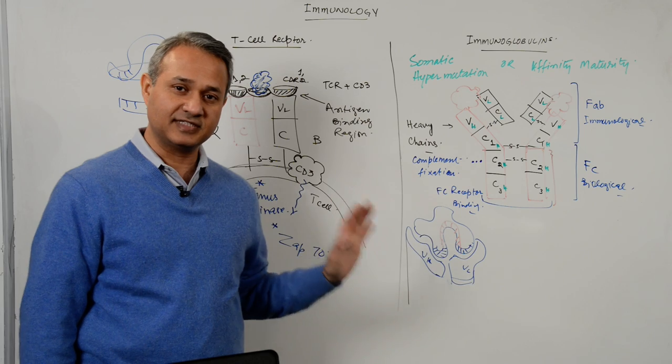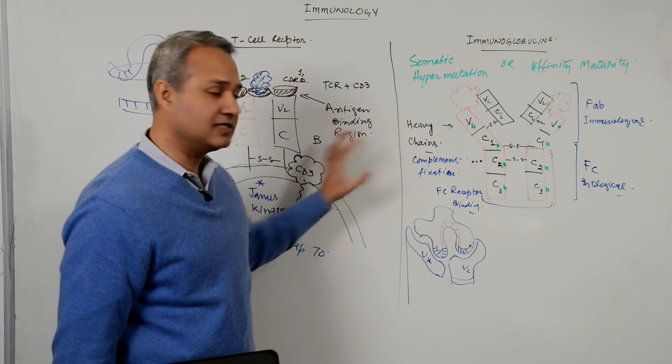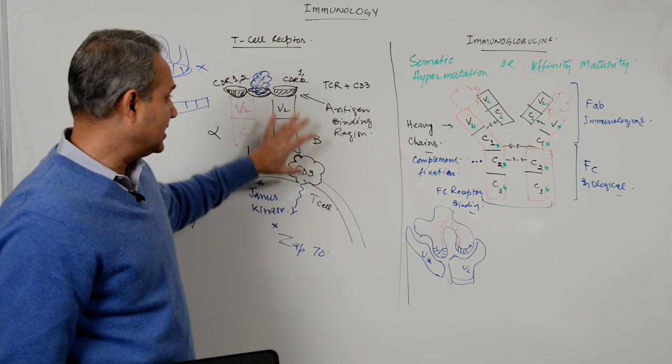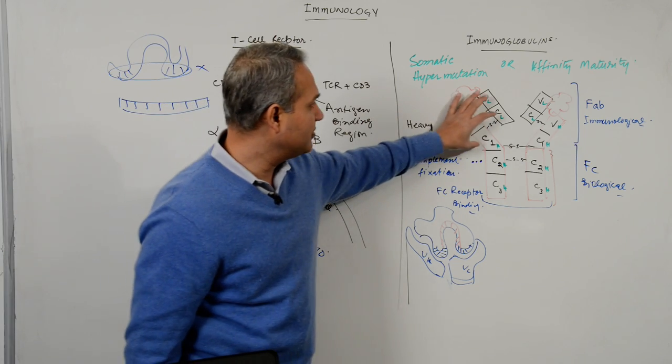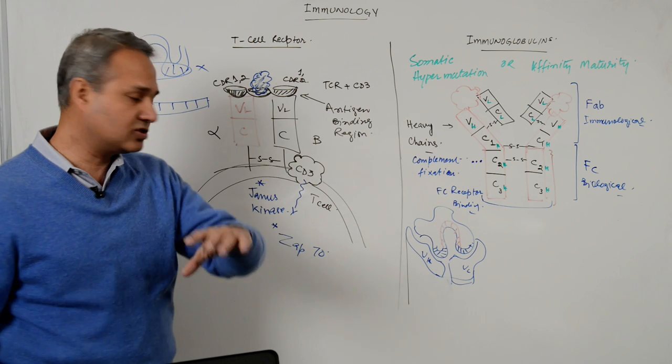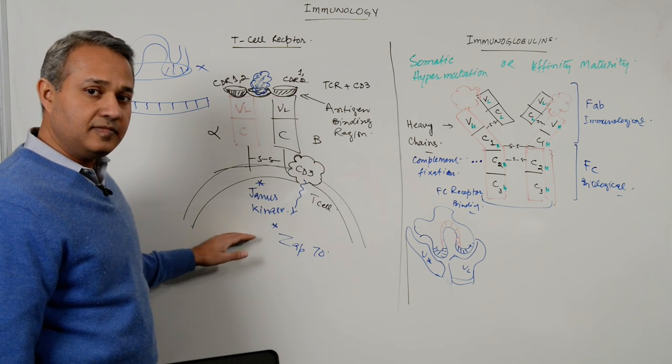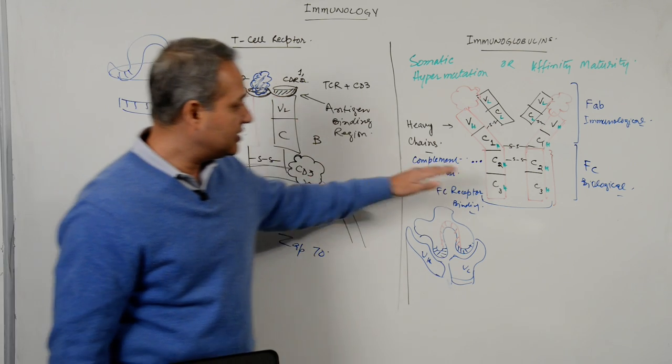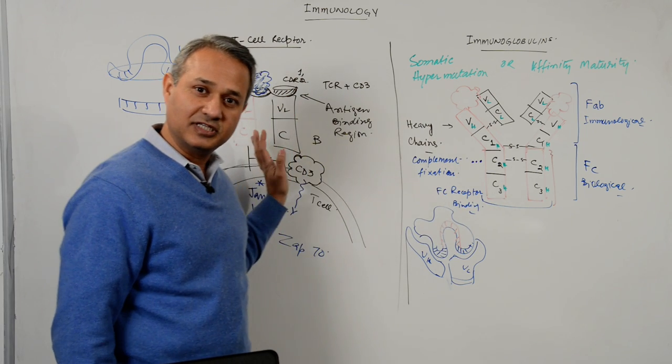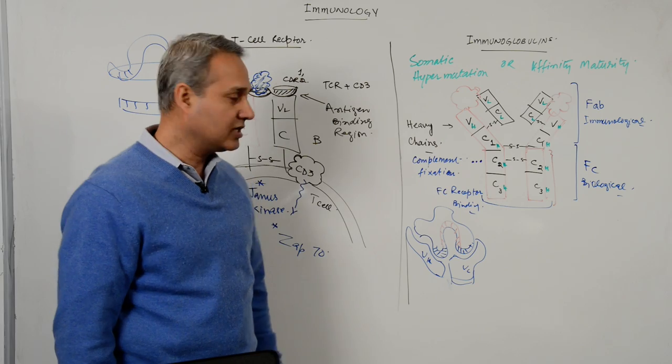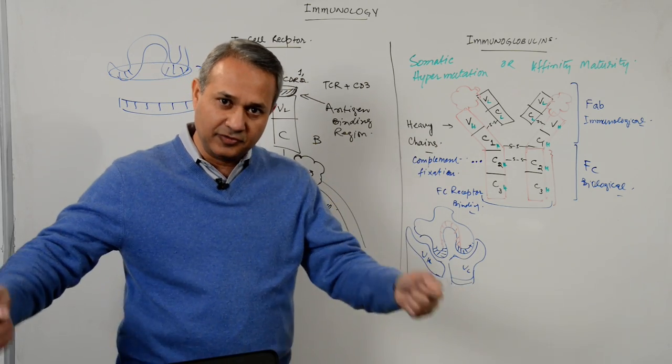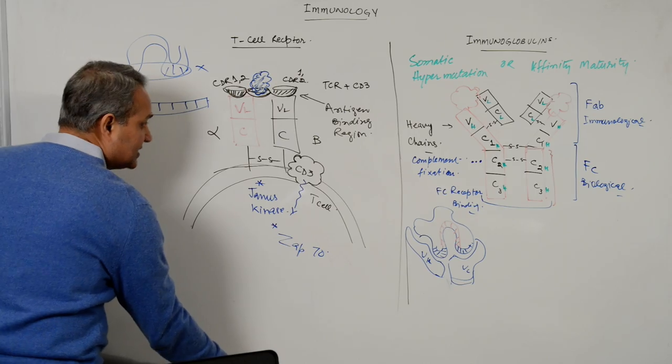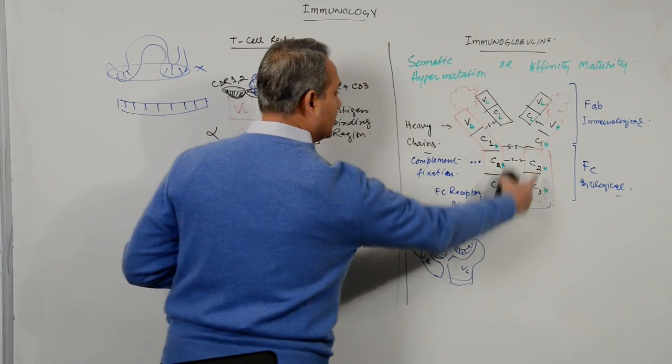All right guys, continuing with the lecture about T cell receptor. We've talked about T cell receptor comparison with immunoglobulins and the dimeric structure which resembles an FAB. Now let's see how T cell receptor formation is done through DNA rearrangement. It's true for immunoglobulin and T cell receptor. Pay attention to this very important topic.